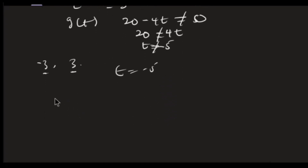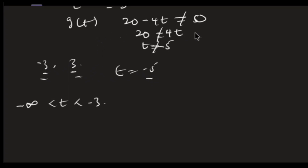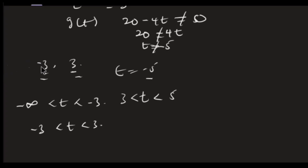So let's see the intervals. From the discontinuity points — negative 3, 3, and 5 — I get four open intervals: negative infinity less than t less than negative 3, then negative 3 less than t less than 3, then 3 less than t less than 5, and 5 less than t less than infinity. These are the four possible open intervals.